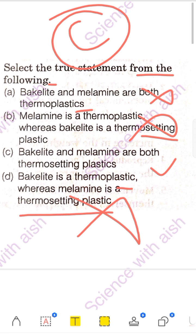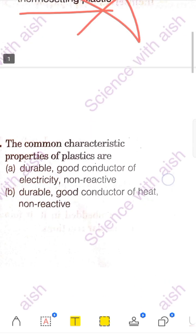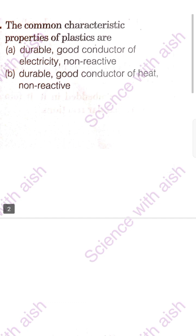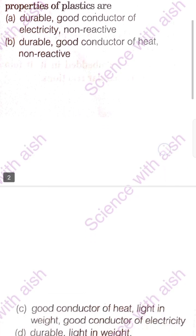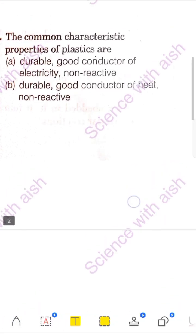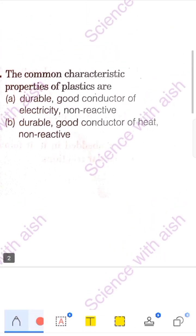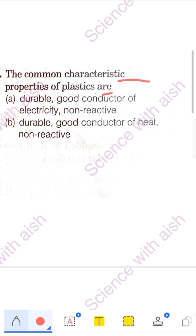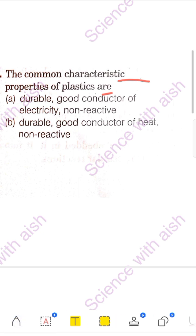Now comes the second question. The question asks about the common characteristics of plastic — some properties of plastic are listed and you need to identify which set of properties is correct. There are four options given.